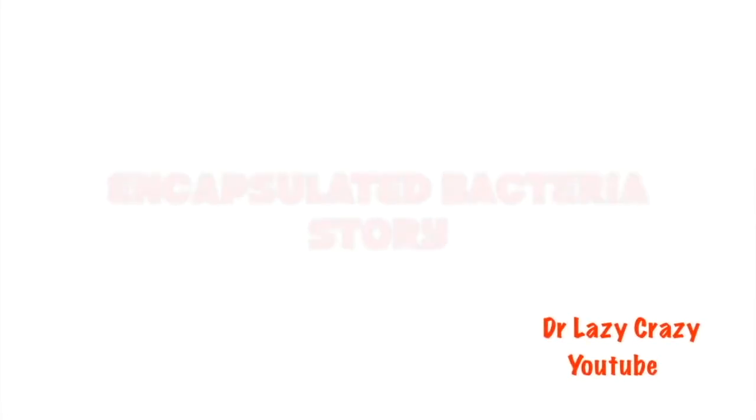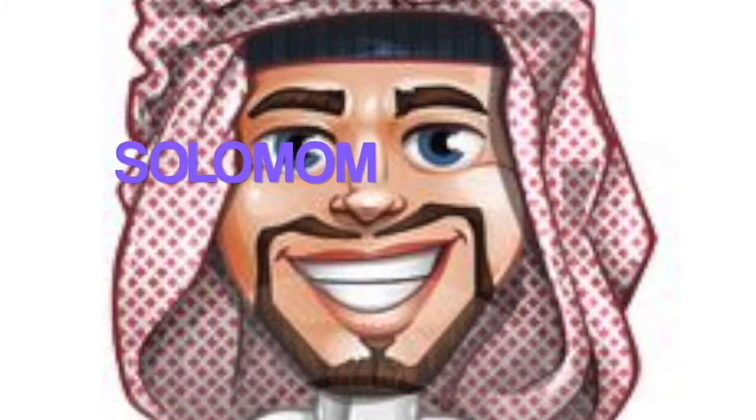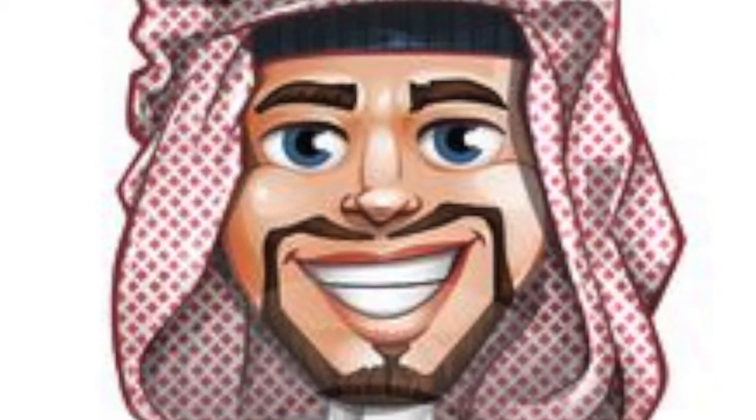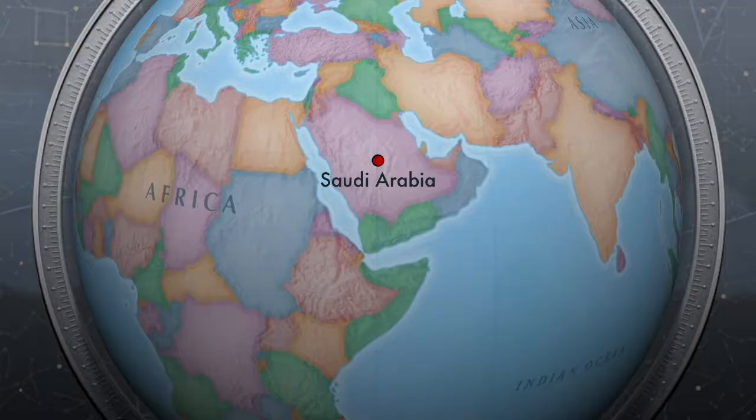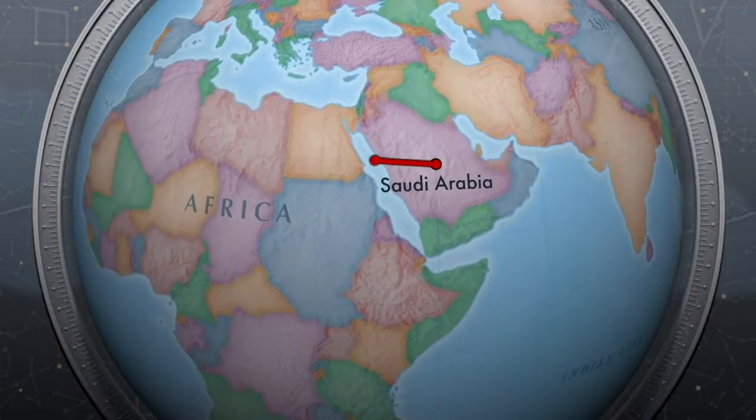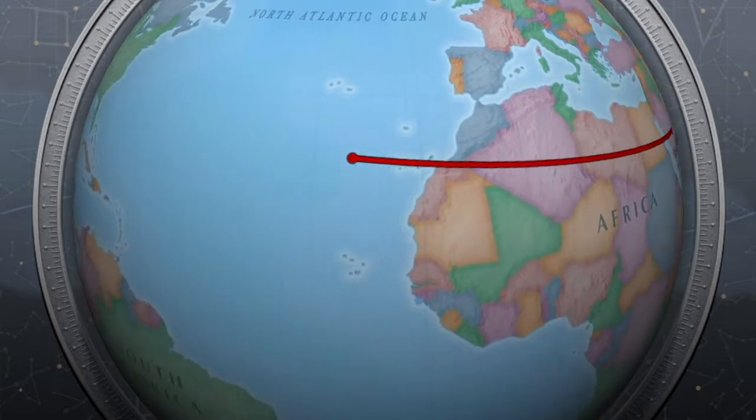So we have this Arab guy whose name is Solomon and he decides to travel to another country. So he picks New Mexico to travel.